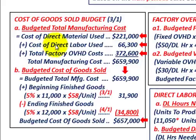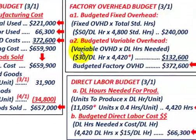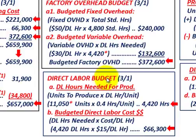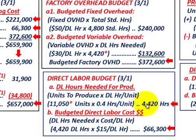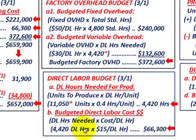The next thing we add is the cost of direct labor used, which is $66,300. Going to our direct labor budget: we take direct labor hours needed for production — the 11,050 units to produce times 0.4 hours per unit — giving us 4,420 hours. Then we determine our budgeted direct labor cost: 4,420 direct labor hours times $15 per hour.